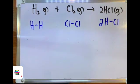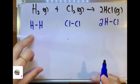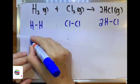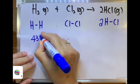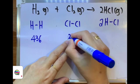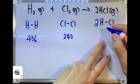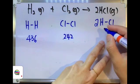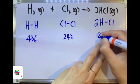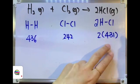Referring to the bond energy chart that I provided in my previous video, we can know that the bond energy involving H-H is 436 kilojoules, Cl-Cl is 242 kilojoules, and each of the H-Cl single covalent bonds will be 431 kilojoules.